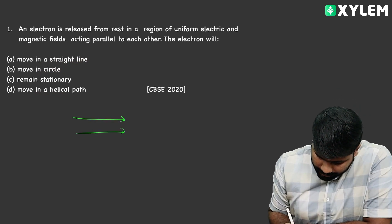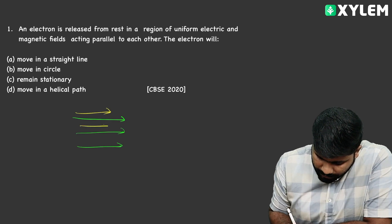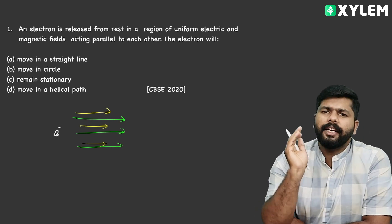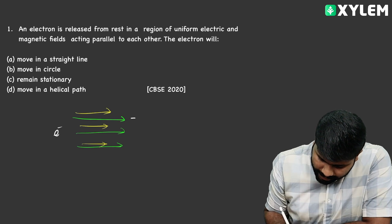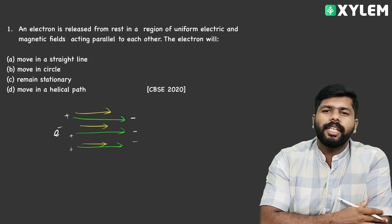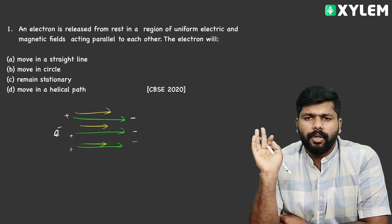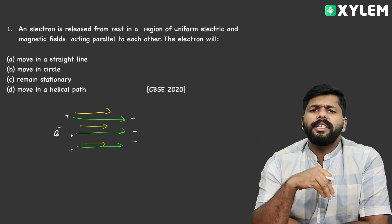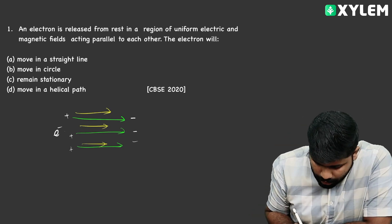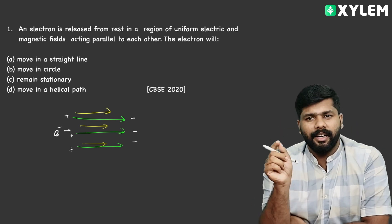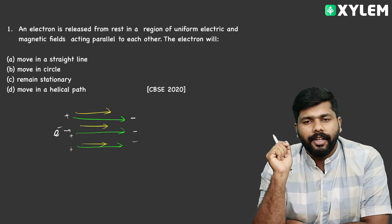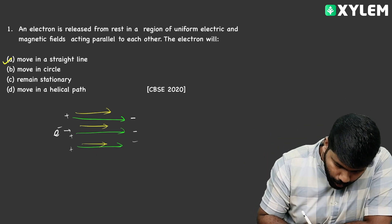The electric field and magnetic field are parallel. In this case, the electron will move in the opposite direction of the electric field, since the electron is negative and the electric field attracts it. The magnetic field — since the electron moves in the same direction as the field, the angle is zero, so the magnetic force is zero. Therefore, the electron moves in a straight line. Correct option: Option A — move in a straight line.